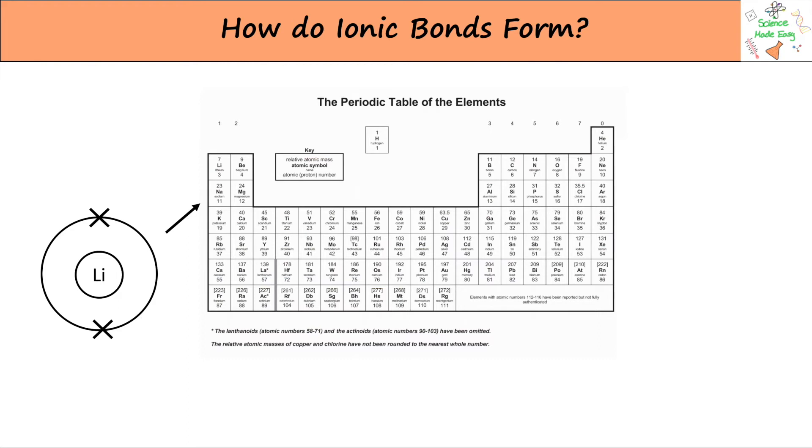We can see here that lithium loses one electron in its outer shell. This makes the lithium ion positive as it has more protons than electrons now that it has lost one. This means that metals form cations, so positive ions.